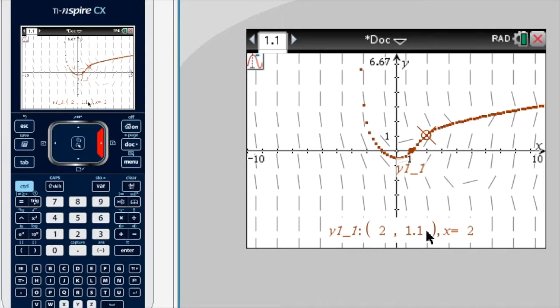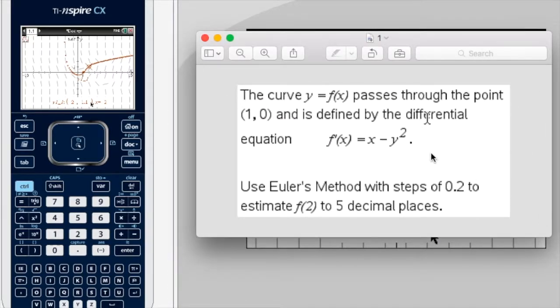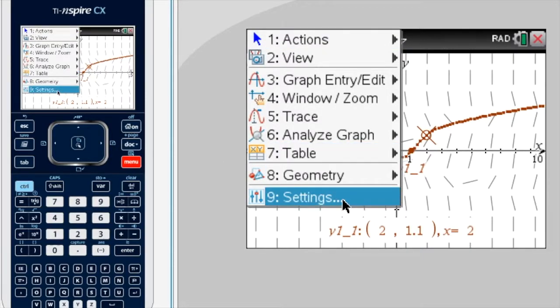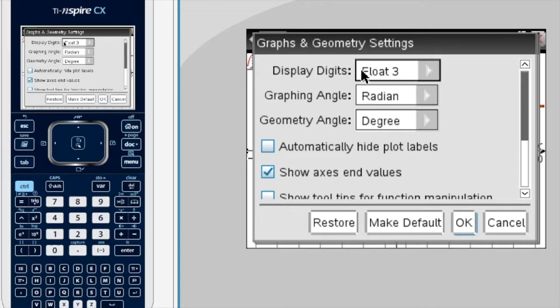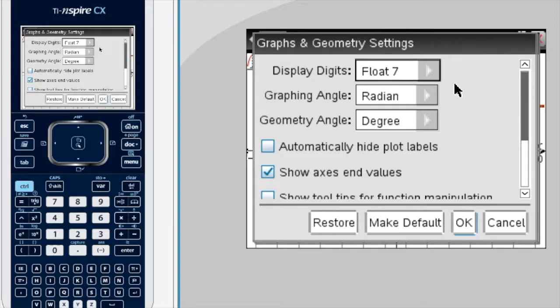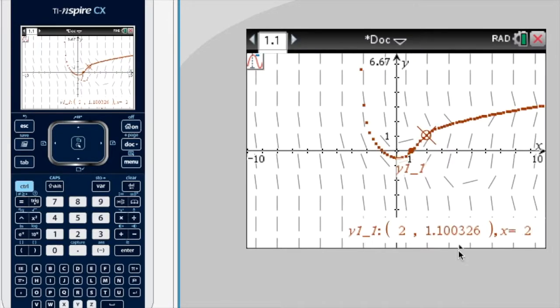Now it's saying f(2) is 1.1. However, they wanted it to 5 decimal places. So I need to change something there. So I go menu, settings. Now they're saying float 3, that's like three significant figures or something like that. So I change it to float 6 or float 7. I just go up to the highest just in case. Press OK. And here it is, our larger value with more decimal places. The approximation of f(2) is that here. They wanted 5 decimal places, so I'll go 1.10033 to round it to 5 decimal places, and that's my answer.